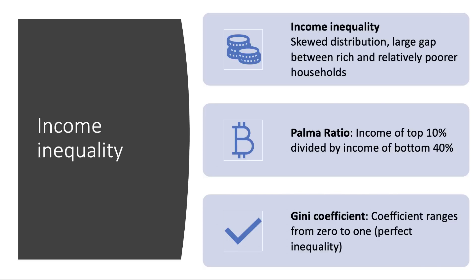Income inequality is a measure of the extent to which the distribution of income is skewed between households. There are two essentially main measures. One is the Palma ratio, which takes the income of the top 10% of the population and divides by the income of the bottom 40%. And of course the Gini coefficient, whose coefficient ranges from zero, where there's perfect equality, to one — perfect inequality.